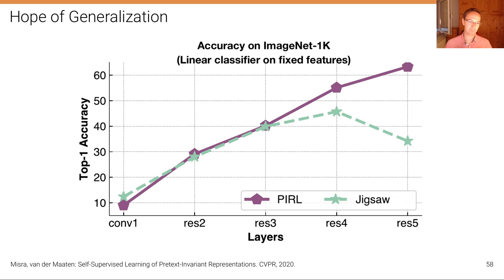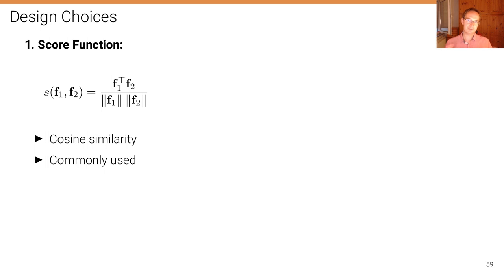With contrastive learning, we don't suffer from the feature saturation problem seen with pretext tasks. We can take features at later layers that are still well aligned with the downstream task, such as ImageNet classification accuracy. There are a couple of design choices for contrastive methods to consider, as well as problems — for example, the large number of negatives leading to very large memory requirements.